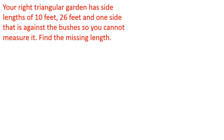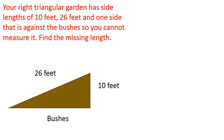For our final question, I decided to throw a word problem in at you. Your right triangular garden has side lengths of 10 feet, 26 feet, and one side that is against the bushes, so you can't measure it. Find the missing length. When I'm given a question like this, I usually like to draw a picture. So, here is my triangle. It has 26 feet for my hypotenuse, the longest side of the triangle. 10 feet for the other side, and there's one side along the bushes that I can't measure. That's my unknown side.